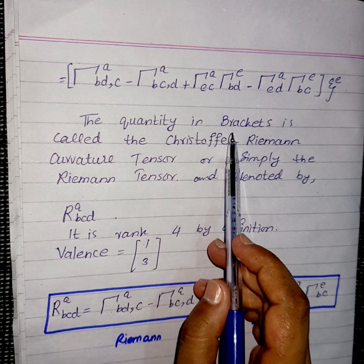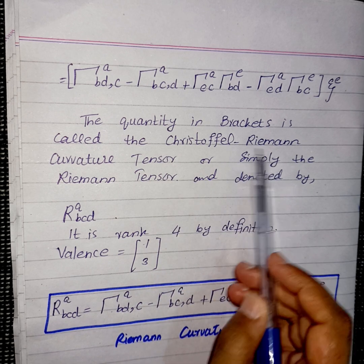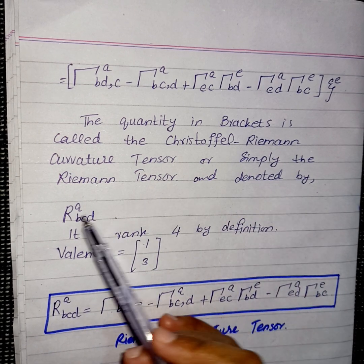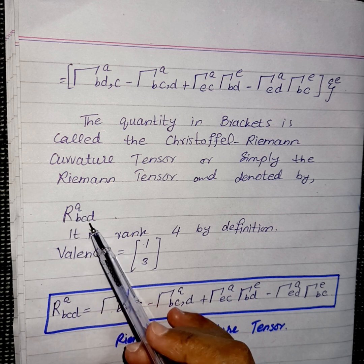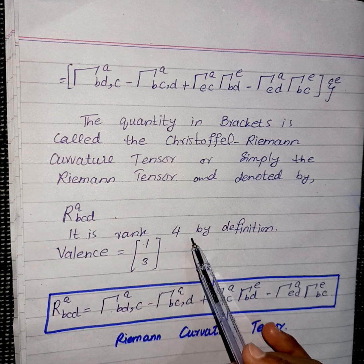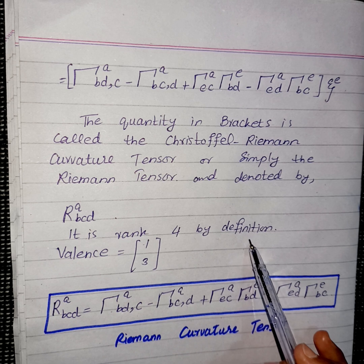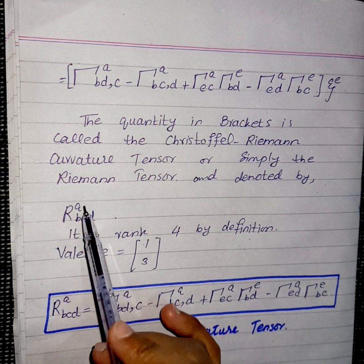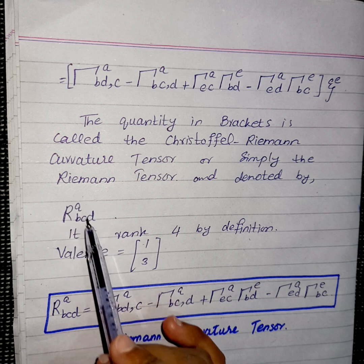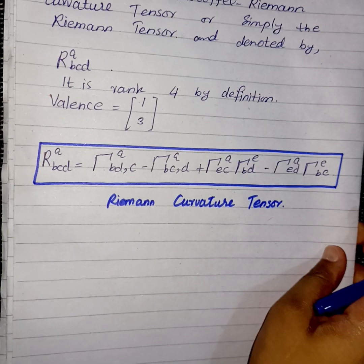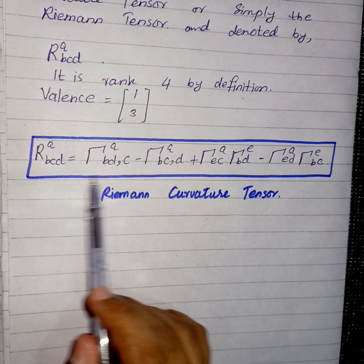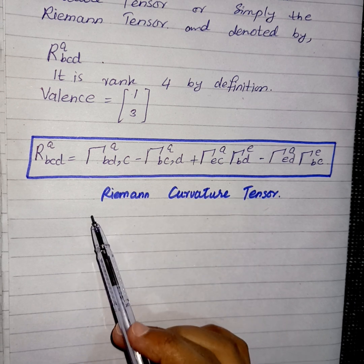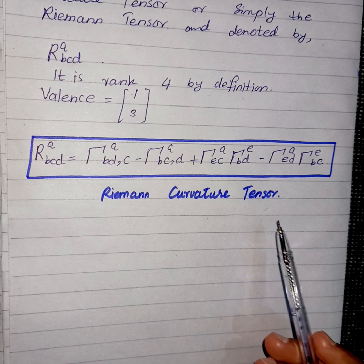The quantity remaining in brackets is called the Christoffel–Riemann curvature tensor, or simply the Riemann tensor, and it is denoted by R^A_BCD. It is a rank-4 tensor by definition, and its valence is (1, 3) because one index is upper and three are lower. You can also write it in the alternative form shown here — this is the Riemann curvature tensor, also known as the Christoffel–Riemann curvature tensor.